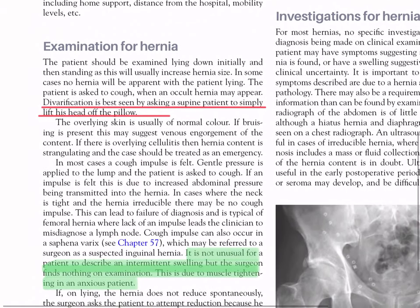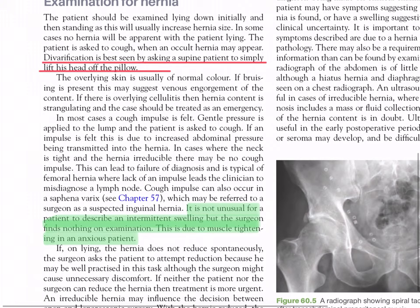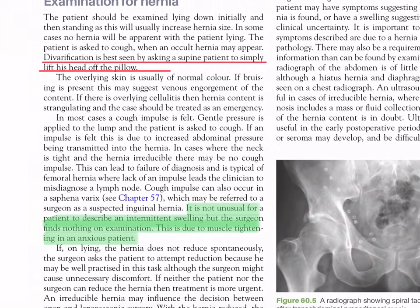For examination, the patient should be examined lying down initially and then standing, as this will usually increase hernia size. In some cases no hernia will be apparent with the patient lying; the patient is asked to cough when an occult hernia may appear. Diastasis is best seen by asking a supine patient to simply lift their head off the pillow. The overlying skin is usually of normal color; if bruising is present this may suggest venous engorgement of the content. If there is overlying cellulitis then hernia content is strangulating and should be treated as an emergency. In most cases a cough impulse is felt: gentle pressure is applied to the lump and the patient is asked to cough; if an impulse is felt this is due to increased abdominal pressure being transmitted into the hernia.